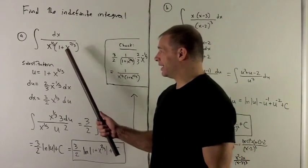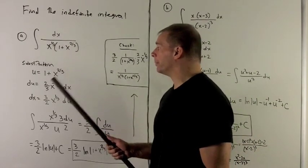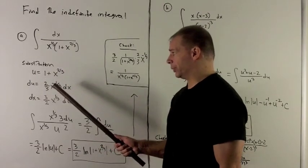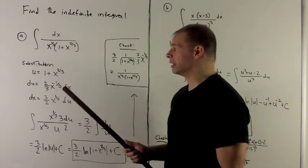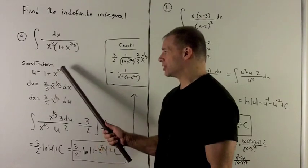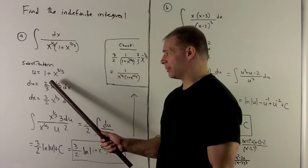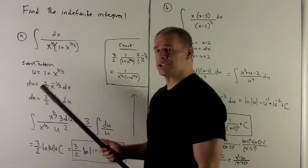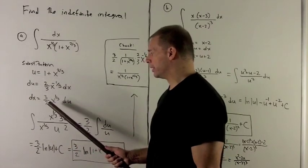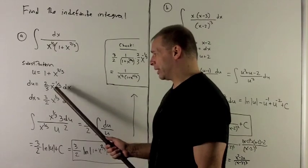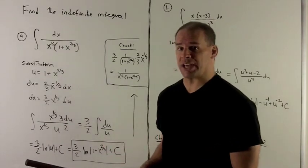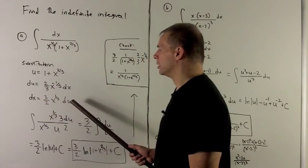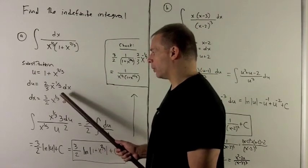If I follow my nose, this looks like it's on the inside of something, so I'm going to substitute it out. Let u be equal to 1 plus x to the 2/3. My du is going to be equal to the derivative of this with respect to x times dx — that's 2/3 brought down, subtract 1 off the exponent, giving x to the minus 1/3. To isolate dx, I multiply both sides by 3/2 to get rid of the 2/3, and then multiply both sides by x to the 1/3 to get rid of the x to the minus 1/3. So dx equals 3/2 times x to the 1/3 du.